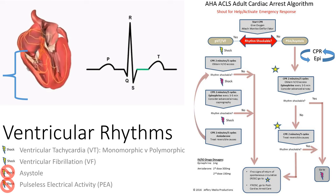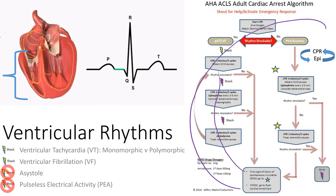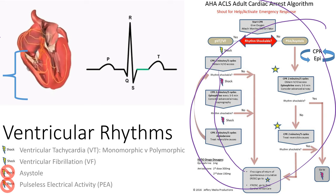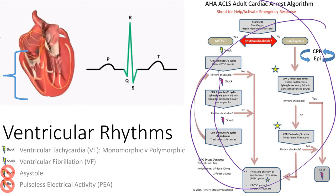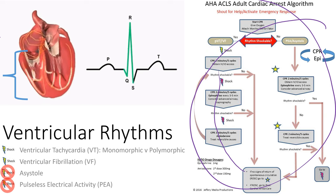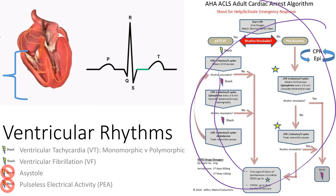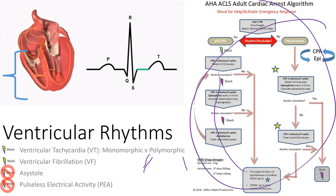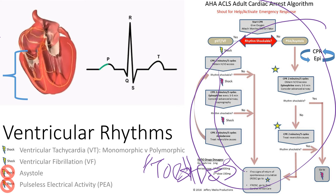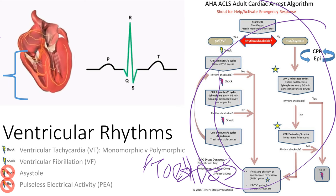In this module on ventricular rhythms, our job is to know the causes, symptoms, treatments, complications, and nursing interventions for these patients. We have ventricular tachycardia — which has two varieties: monomorphic and polymorphic — and polymorphic VT is also known as torsades. Then we have asystole and PEA. These are all ventricular rhythms where the ventricles are not working properly.